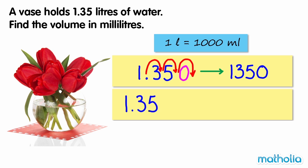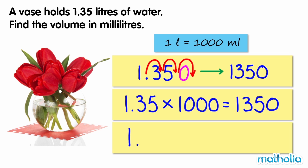1.35 times 1000 equals 1350. So 1.35 litres equals 1350 millilitres. There is 1350 millilitres of water in the vase.